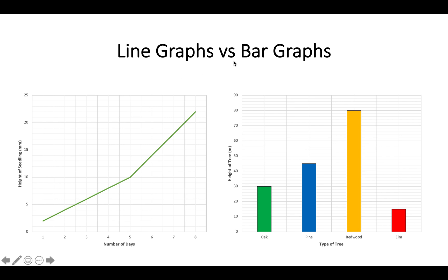In terms of a bar graph, you can see that we do not have two sets of numbers. Instead, we have categories at the bottom. In this example, we have types of trees, different categories, different names, and we still have numbers going up the left-hand side because this is what we are measuring. Use a line graph if you have two sets of numbers. Use a bar graph if you have categories or names and a set of numbers.